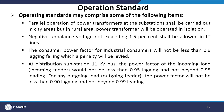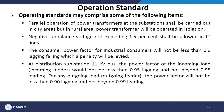Operating standards specify that parallel operation of power transformers at substations shall be carried out in city areas, while in rural areas transformers operate in isolation. Negative unbalanced voltage not exceeding 1.5 percent shall be allowed in LT lines. Industrial consumer power factor shall not be less than 0.9 lagging, with a penalty for violation. At distribution substation 11 kV buses, incoming load power factor shall not be less than 0.95 lagging and not beyond 0.95 leading; outgoing load power factor shall not be less than 0.9 lagging and not beyond 0.99 leading, ensuring reactive power requirements are met.